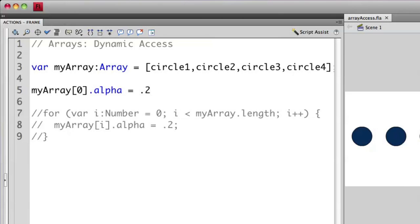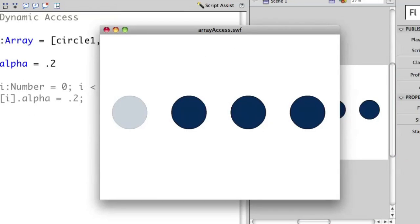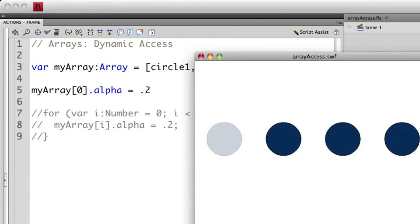Let's run this to prove how this works. As you can see, I've accessed the first element or element 0, which is the instance name circle1. I've taken the alpha property and modified its alpha level to 0.2 or 20%.